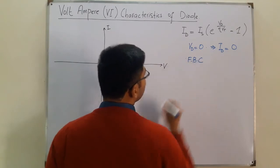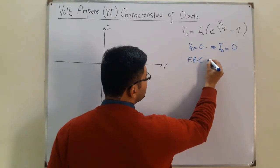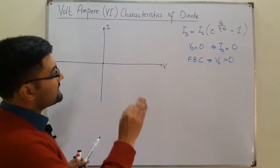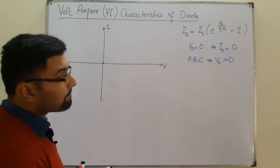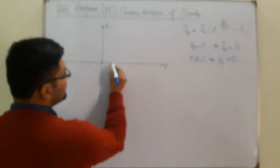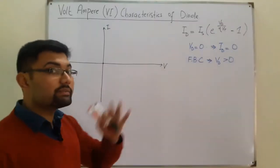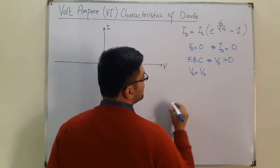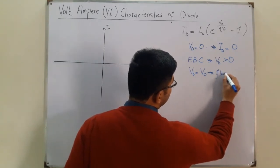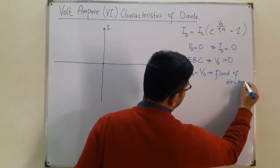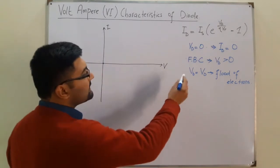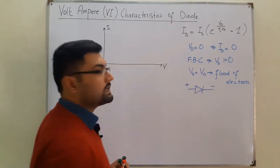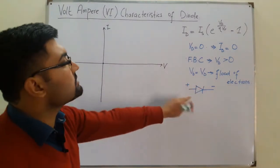For the forward bias condition (FBC), VD is greater than 0. A positive VD is applied — but the current remains zero until the barrier potential is overcome, i.e., until VB equals VD. At that point we have a flood of electrons passing. In forward bias, the P-side is connected to the positive terminal and the N-side to the negative terminal.